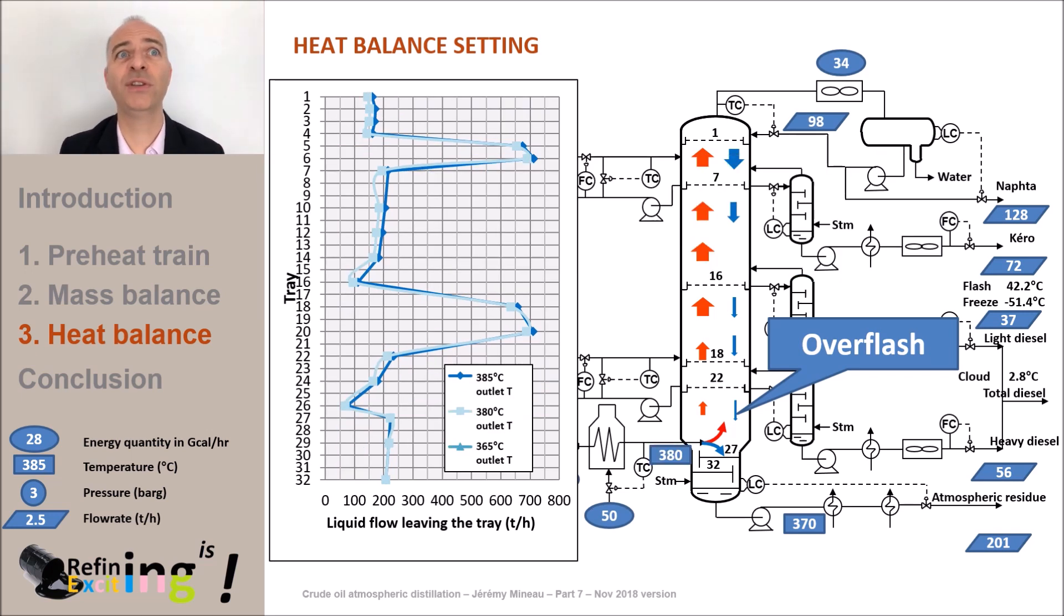So, let's reduce the furnace outlet temperature from 380 to 365 degrees C. And we see that the overflash rate drops to 45 tons an hour, which is quite correct. We could still reduce the furnace outlet temperature, but for our example, I propose you to stop here. We see that the flash point of kerosene drops by 1.7 degrees C and the diesel cloud point is increased by almost 1 degree C.